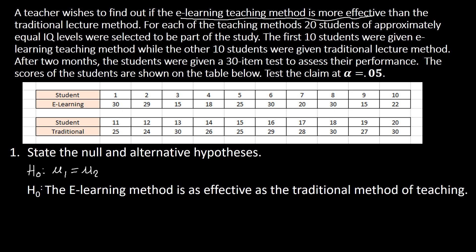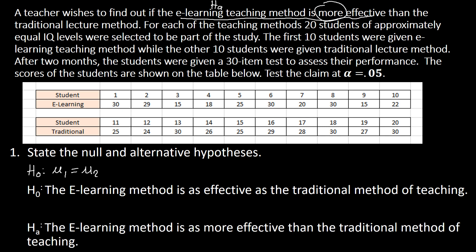For the alternative hypothesis, the teacher's claim is the alternative because it uses the keyword 'more.' The alternative is: the e-learning method is more effective than the traditional method of teaching. In symbol, H₁: μ₁ > μ₂, where μ₁ is the mean of the e-learning group and μ₂ is the mean of the traditional lecture group.